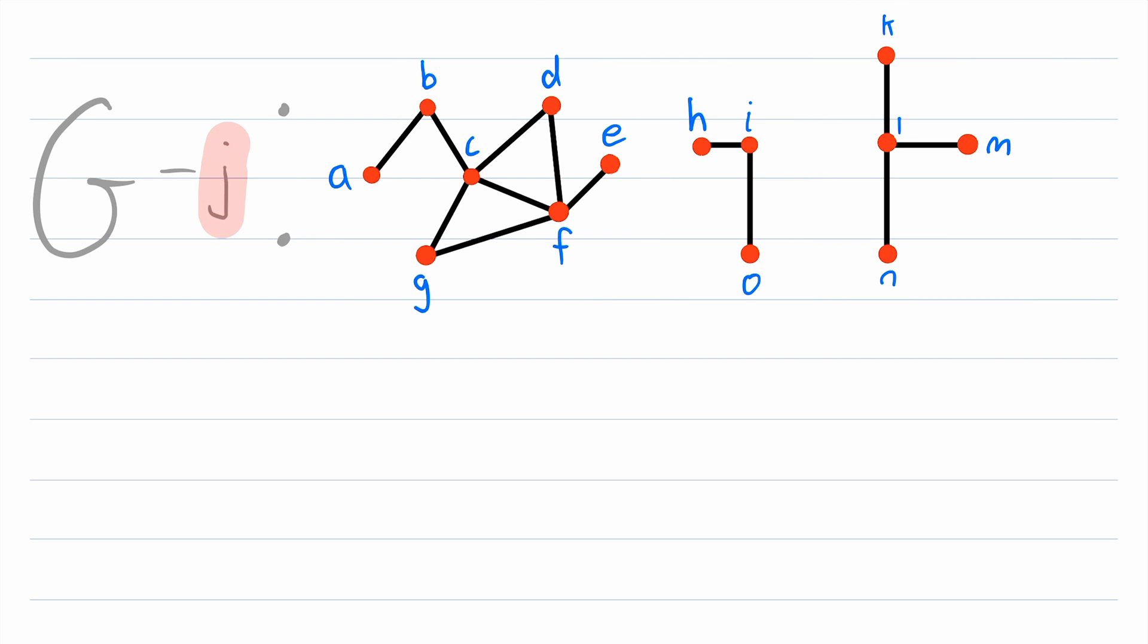So by deleting the vertex J from the graph G, we got a graph that has more components than G did. Thus, we say that J is a cut vertex.